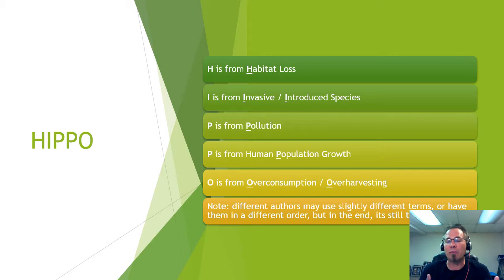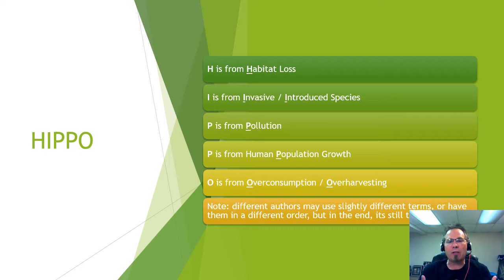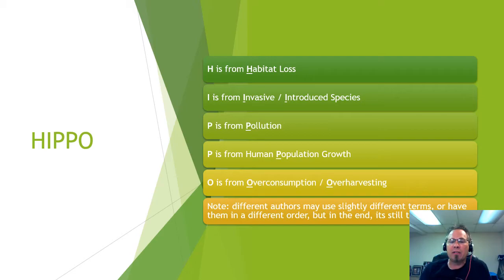Sometimes different authors use slightly different letters, but it still stands for the same things: habitat loss, invasive species, pollution, population growth, and overconsumption/overharvesting. That's where HIPPO comes from. These are the overarching umbrella concepts that a lot of what we'll talk about falls into. For example, pollution covers groundwater pollution and other types — getting rid of that makes a better sustainable environment.